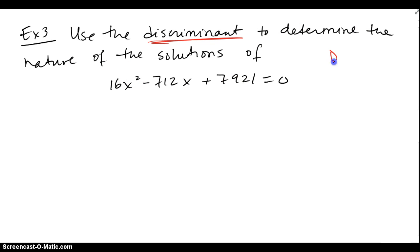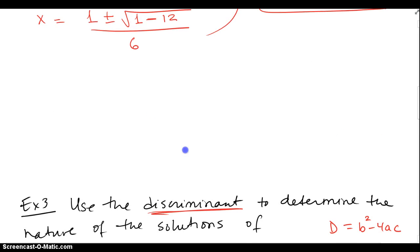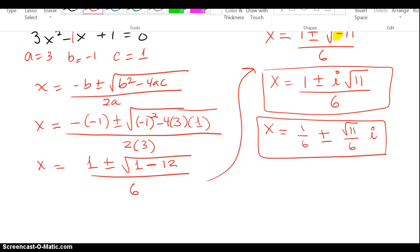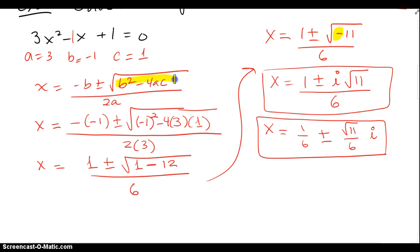Use the discriminant to determine the nature of the solutions of this equation. Remember, discriminant is b squared minus 4ac, so that's all we worry about out of the entire quadratic formula. Out of this entire thing right here, the discriminant is only this guy.